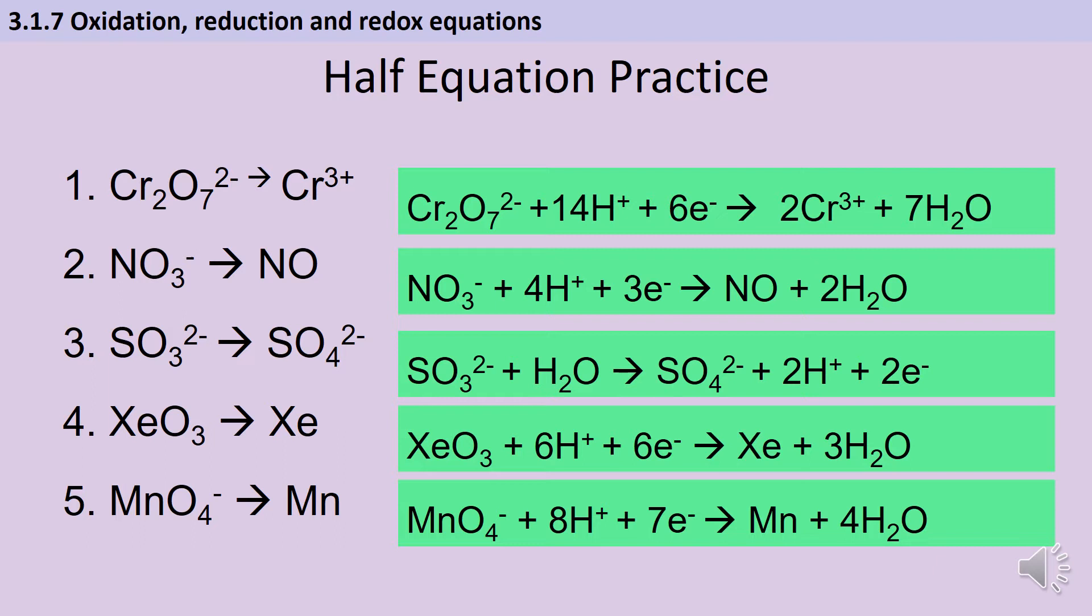In question three we've got sulfur four being oxidized to sulfur six. In question four you've got a xenon ion with an oxidation state of plus six being reduced to xenon as an element which has an oxidation state of zero. And then finally you've got some manganese seven in a manganate ion being reduced to manganese as an element which again has an oxidation state of zero.